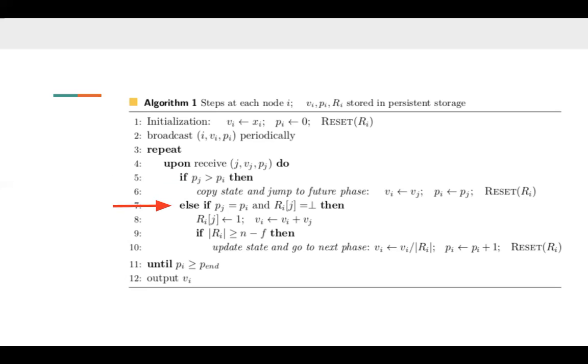Otherwise, if the received phase number p equals its phase number pi, then node i checks whether it has already received from node j in phase pi. If the jth element of ri is 1, in other words, j has already been received, then i just ignores this message. Otherwise, if it's 0, then node i updates its local state from vi to vi plus v. Also, it updates the message counter by updating ri of j from 0 to 1.